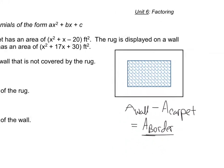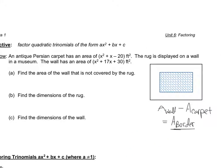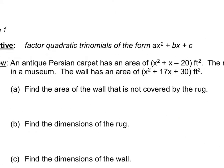A lot of the problems in the homework involve that concept. So when I'm looking for the area of the wall that's not covered by the rug, I'm going to take the area of the wall in general, which is x² + 17x + 30, and subtract from it x² + x - 20. Whatever that difference is would be the area of that unoccupied border.